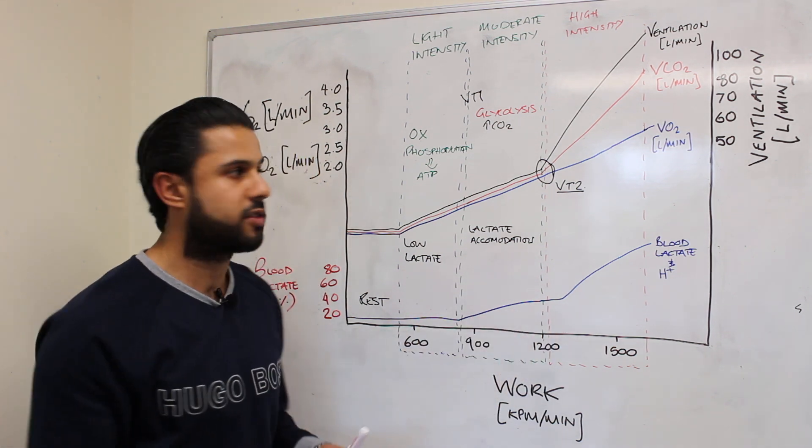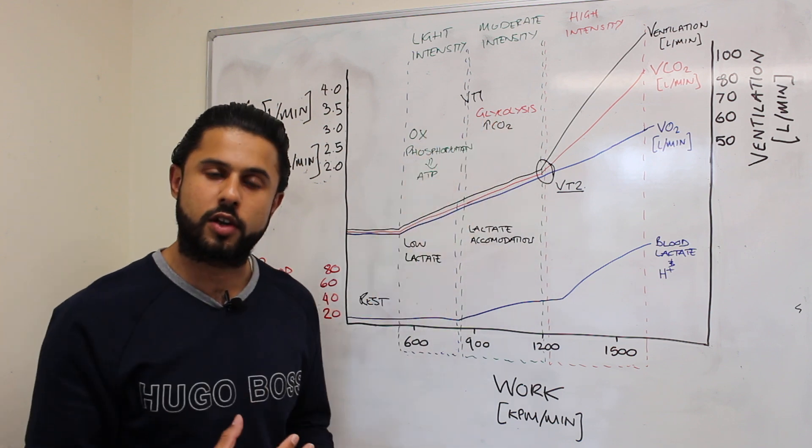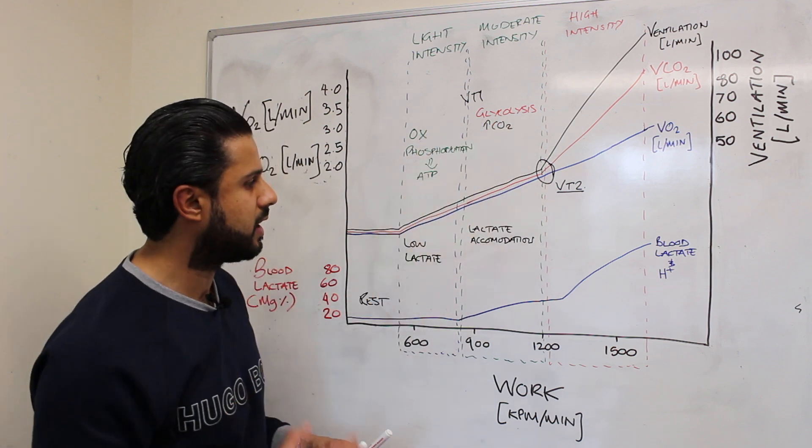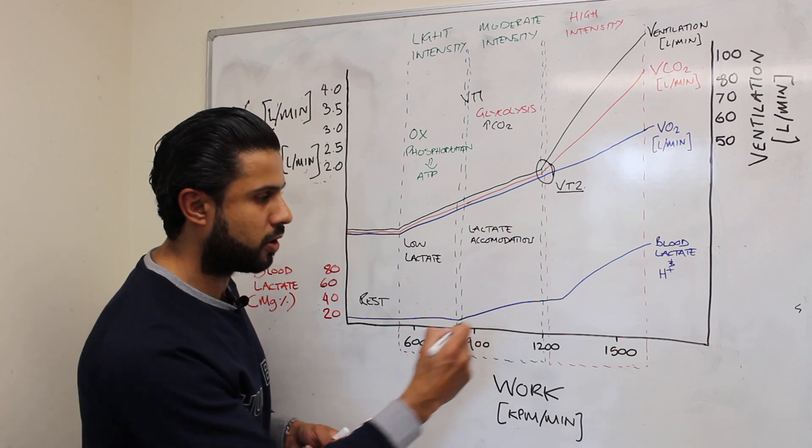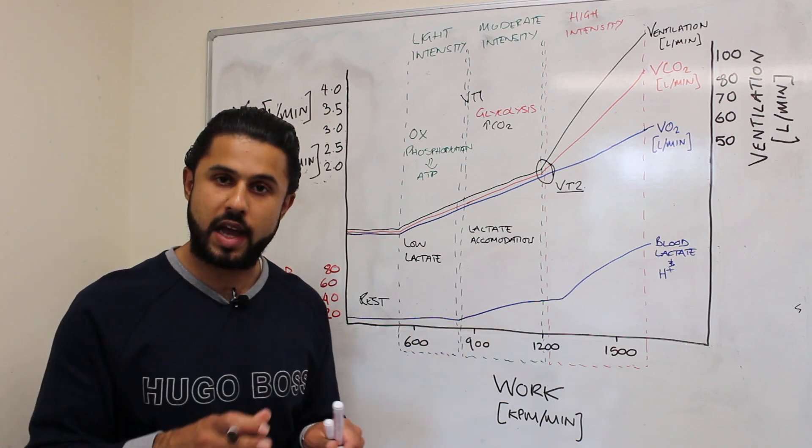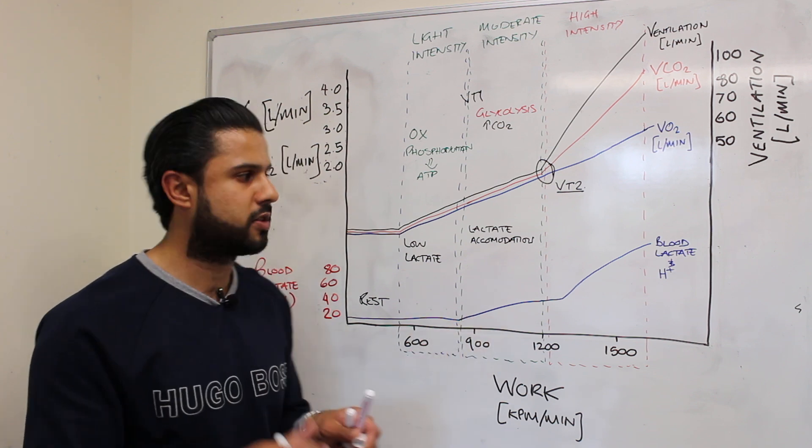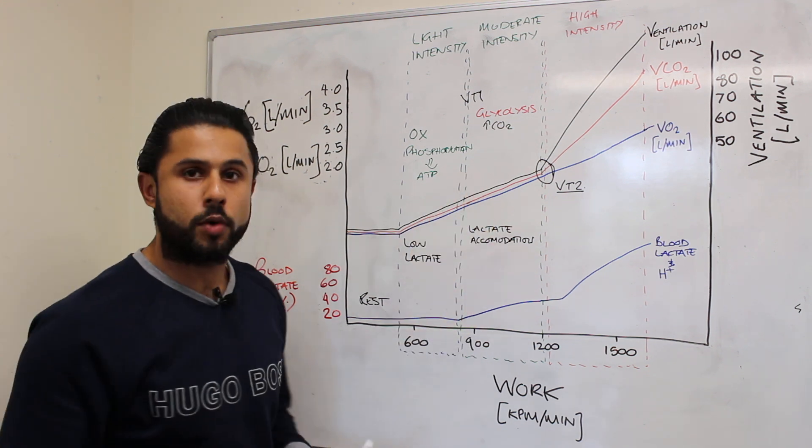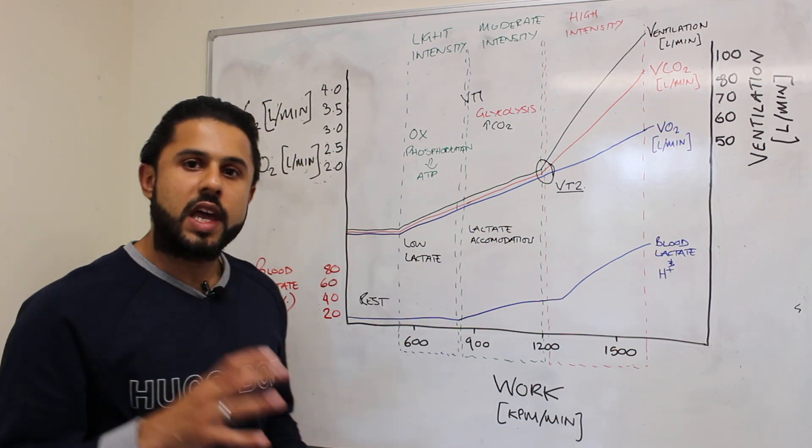What that means is that the lactate that's being produced by the muscle tissue as a result of some reliance on glycolysis is being cleared away. So that lactate is being cleared away, it's not being built up, and it's not causing any acidosis or major acidosis which will eventually go on to inhibit muscle action. So this is what's happening at moderate intensity phase.